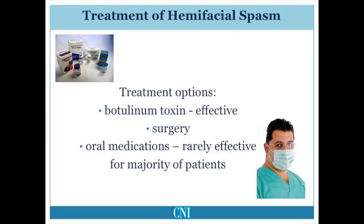There are three major forms of treatment for hemifacial spasm. Injections of the involved facial muscles with botulinum toxin are the most common treatment and are effective in the vast majority of patients. Surgery to decompress the facial nerve at the level of the brainstem may be occasionally used and is also very effective. A variety of oral medications have been tried for hemifacial spasm, but these are usually ineffective.